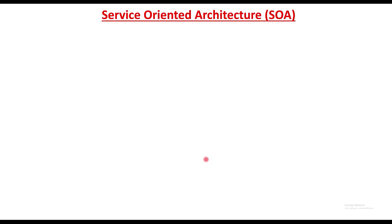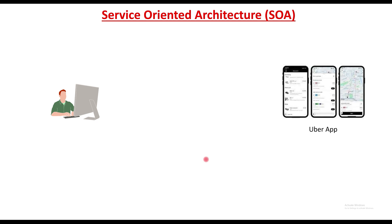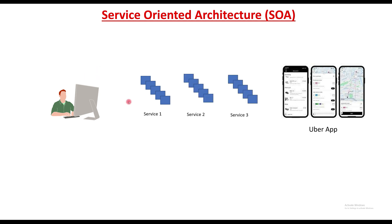Let me explain this SOA with one application. Suppose I am a developer and I am trying to create an Uber app. What do I need? I need a login page, a map where drivers and customers can see where the cars are, and a payment gateway. So I can create three services — service one representing Google Maps, service two representing the payment gateway, and service three representing the login page.